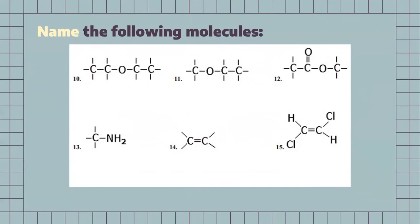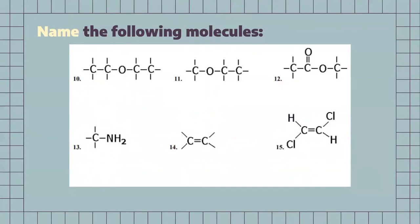For our next one, we have a carbon chain and another carbon chain, and between them connecting is an oxygen. So, we know it's going to be a type of ether. The two carbon chains that are attached to it are both going to be ethanes. So, since we have two ethanes, we're going to say it's going to be diethyl ether — diethyl meaning two, and ether because that's the type of functional group present.